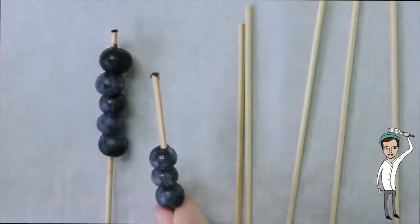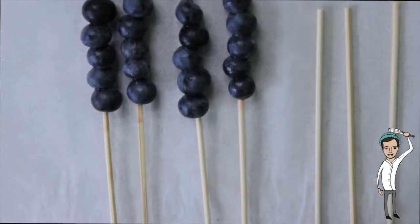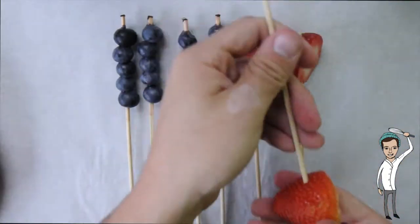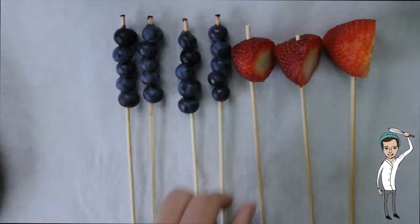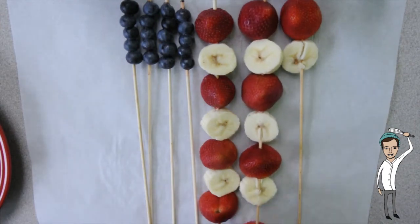To start out, put five blueberries on the top of the first four kebabs. Then start alternating with strawberries and bananas to create the red and white stripes on the bamboo skewers. Make sure that they line up perfectly.